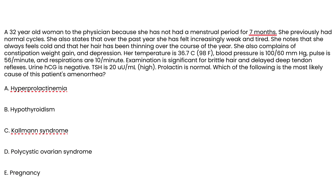Vignette two: A 32-year-old woman has not had a menstrual period for seven months after previously normal cycles. Over the past year she has felt increasingly weak, tired, always cold, with thinning hair, constipation, weight gain, and depression. Temperature 98, blood pressure 100/60, pulse 56, respirations 10. Exam shows brittle hair and delayed deep tendon reflexes. Urine hCG is negative, TSH is 20 (high), prolactin is normal. The most likely cause is hypothyroidism — feeling cold and weight gain are classic findings consistent with hypothyroidism.